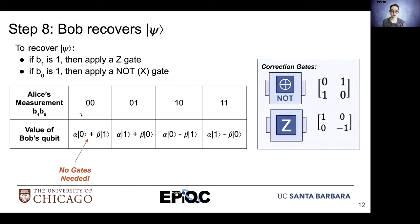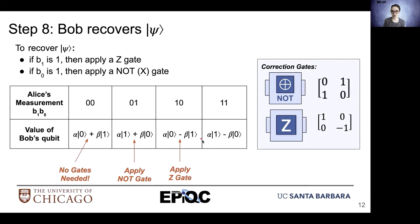If Alice measures a zero zero, Bob already has the state of psi in his possession. If Alice measures a zero one, Bob has to apply a NOT gate in order to exchange the probability amplitudes associated with ket zero and ket one. If Alice measures a one zero, Bob must apply a Z gate to correct the phase associated with ket one in his qubit.